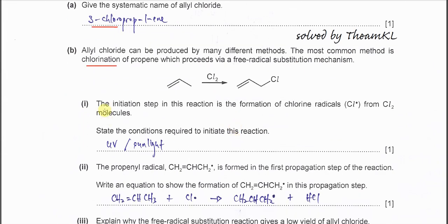B(i). The initiation step in this reaction is the formation of chlorine radicals. State the conditions required. Very easy, just put UV or sometimes sunlight.